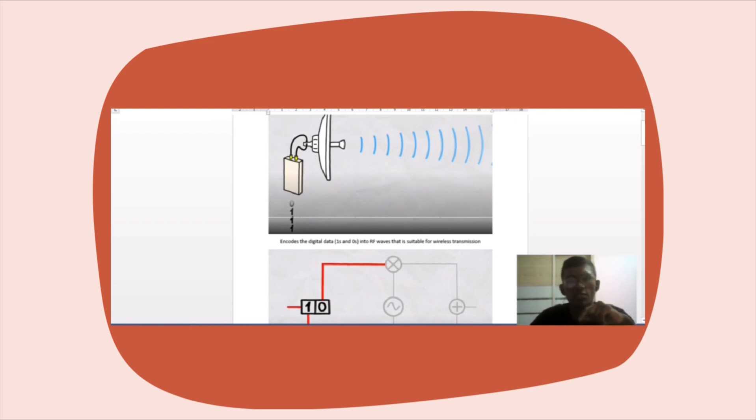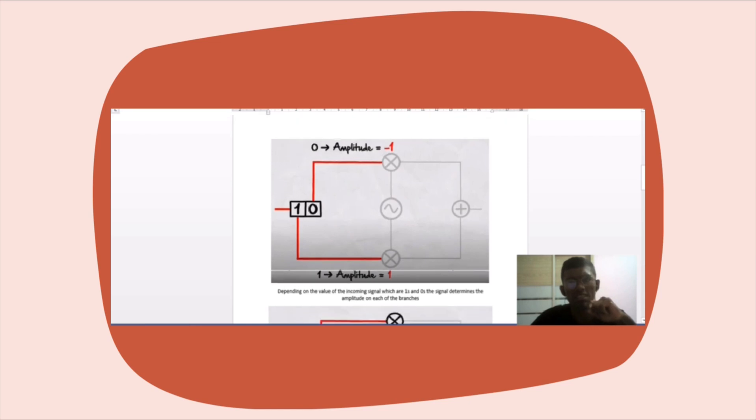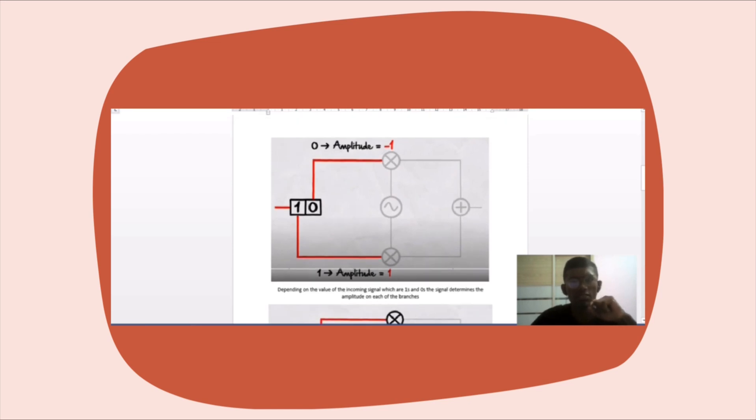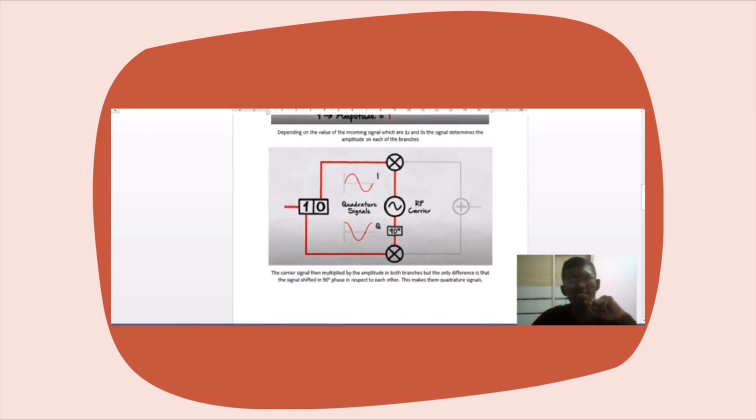Radio frequency waves are suitable for wireless transmission. For example, with a 4-QAM modulator, two data bits are selected first and then divided into two branches. Depending on the value of the incoming signal, which are ones and zeros, it determines the amplitude of the signal in each branch. Later, the carrier signal is multiplied by the amplitude in both branches.